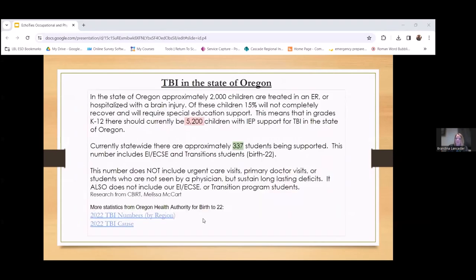I just want to share some statistics with you for the state of Oregon. Students with brain injuries are significantly under-identified everywhere. In the state of Oregon, there are approximately 2,000 children treated in emergency rooms or hospitals yearly for brain injury. Fifteen percent of these children will not completely recover and will require specialized support. That means cumulatively, from kindergarten through 12th grade, there should be approximately 5,200 students being supported on IEPs with a disability of traumatic brain injury.